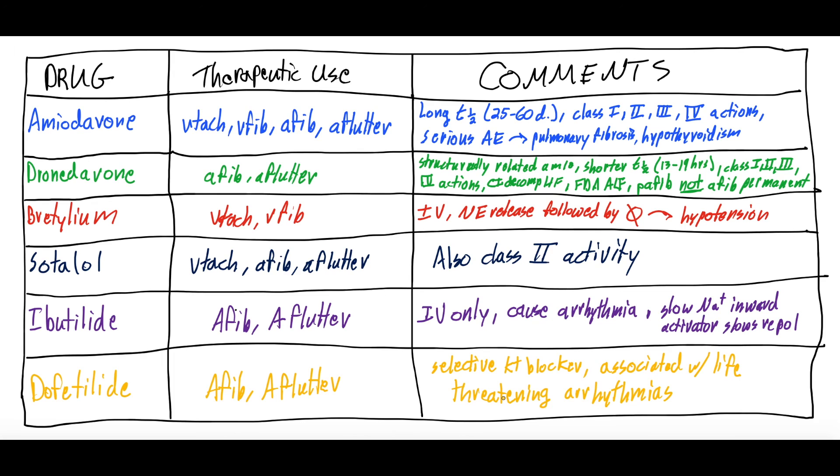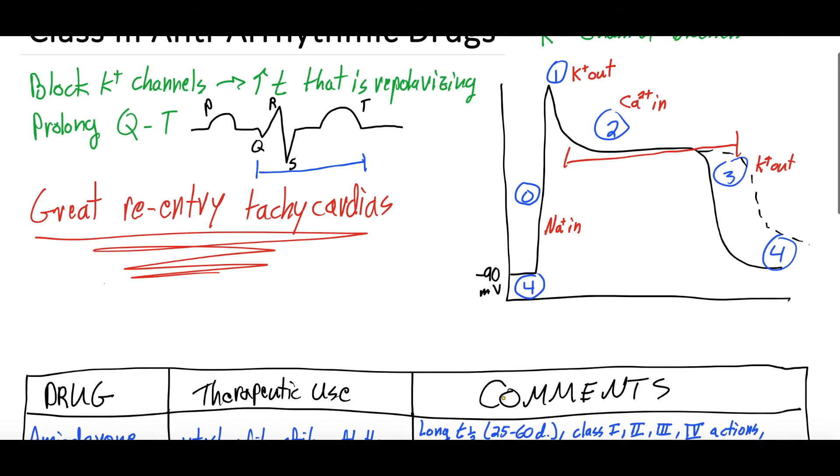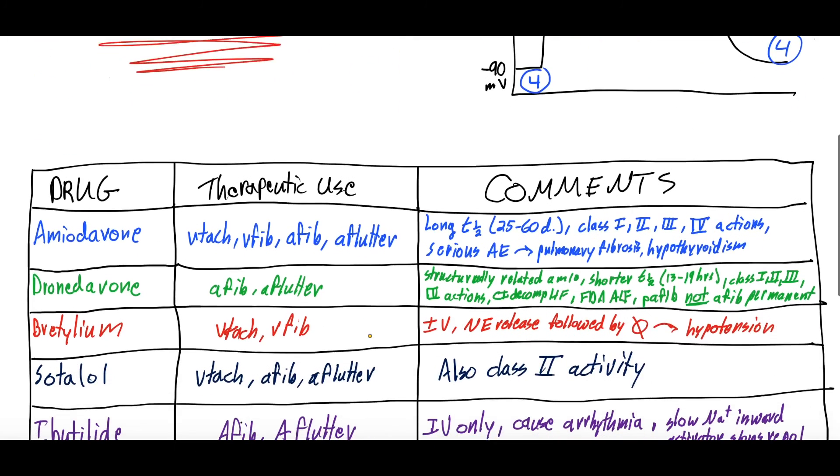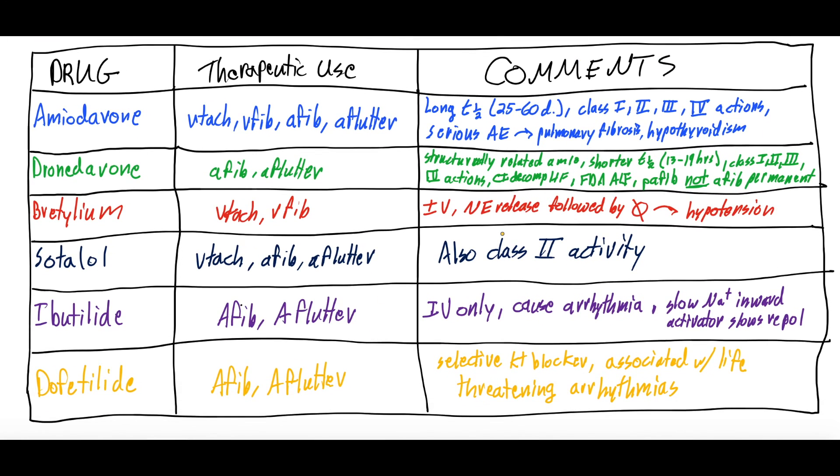Alright, so these are Class 3 antiarrhythmics, the potassium channel blockers. That's how they work. Those are the different potential medications and uses. Hope that this was helpful. Let us know what questions, thoughts, comments you have down below. Feel free to hit subscribe, follow along, check out our other antiarrhythmics videos and other videos in general. And we'll see you all next time. Stay well.